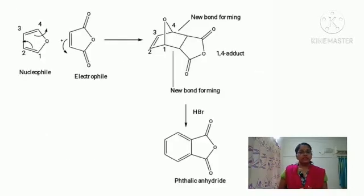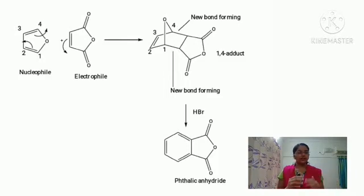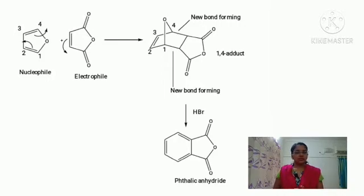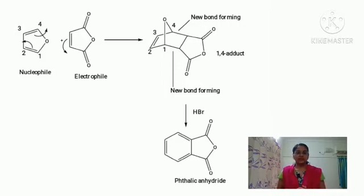When furan reacts with maleic anhydride, the double bonds of furan shift and a new single bond forms at the first and fourth positions of the furan diene — a 1,4-attack with maleic anhydride. After forming the 1,4-adduct, dehydration occurs: HBr (hydrobromic acid) is added and we get phthalic anhydride as the product.